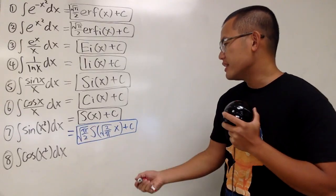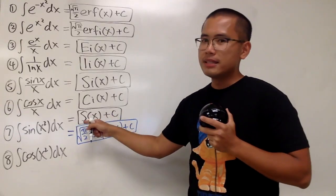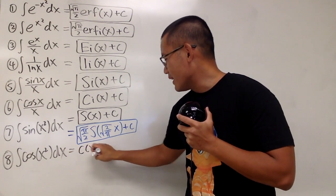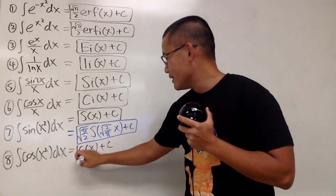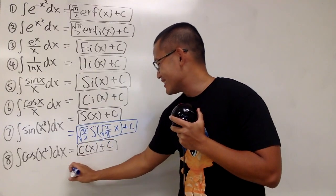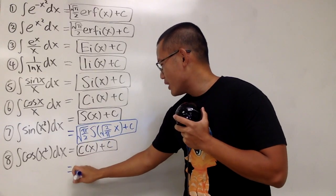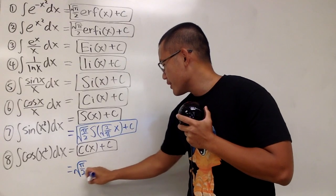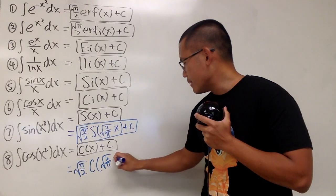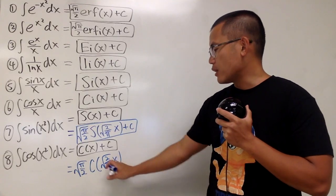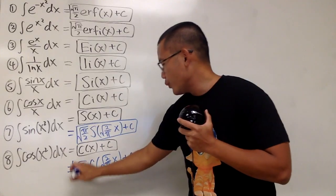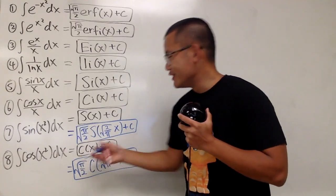For number 8, you can guess it — just replace the S with C. For the first definition, we answer this as C of x plus C. Or, same thing here: we answer this as square root of pi over 2 times C of square root of 2 over pi times x, where x is outside of the square root. Put a plus C and we are done.